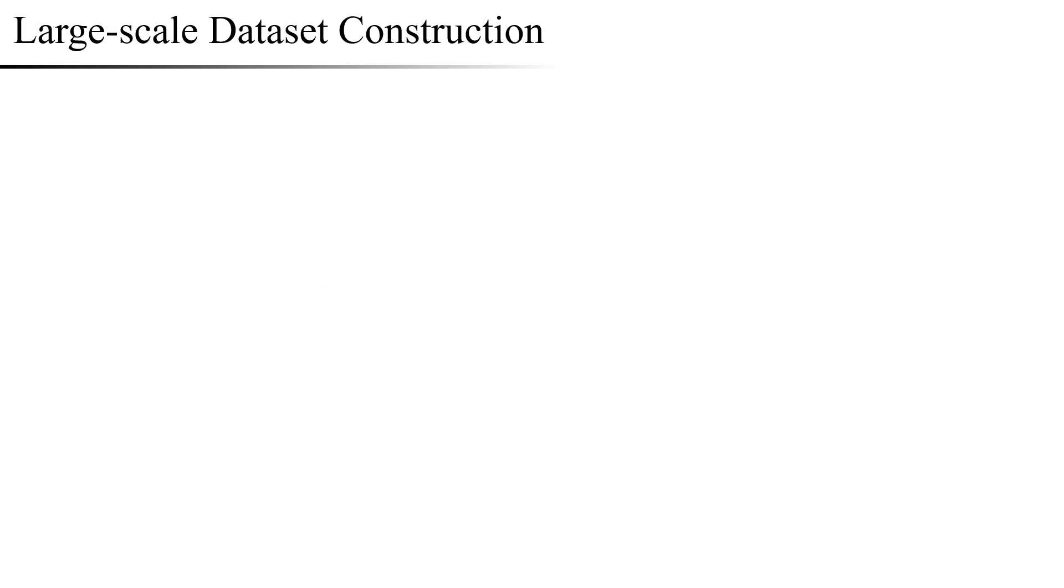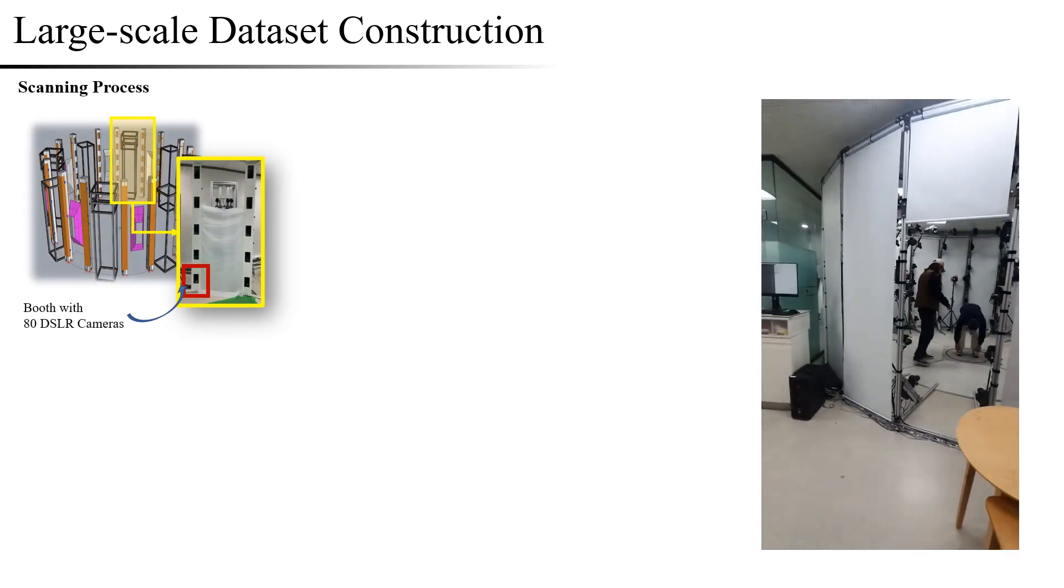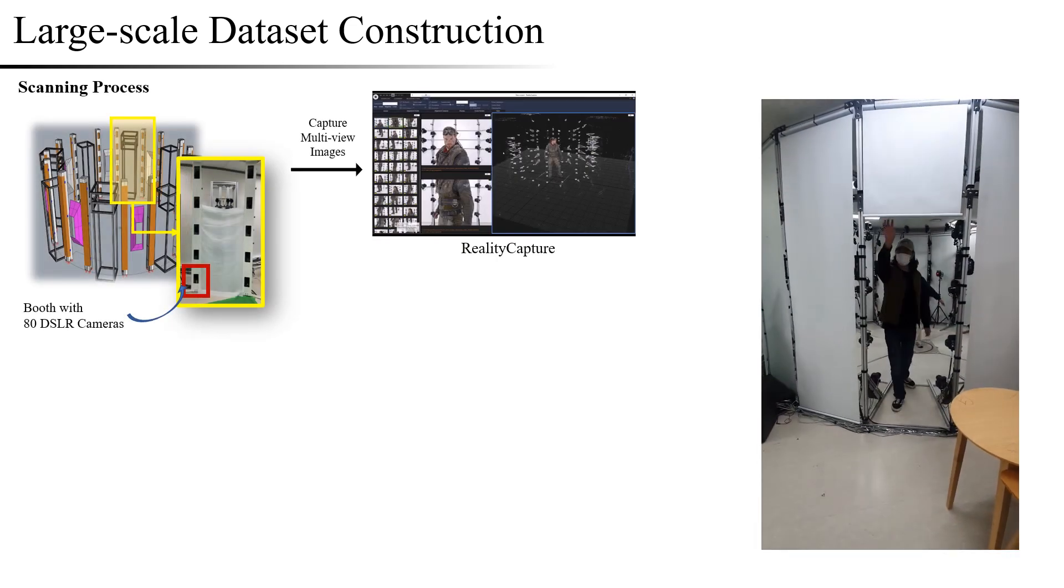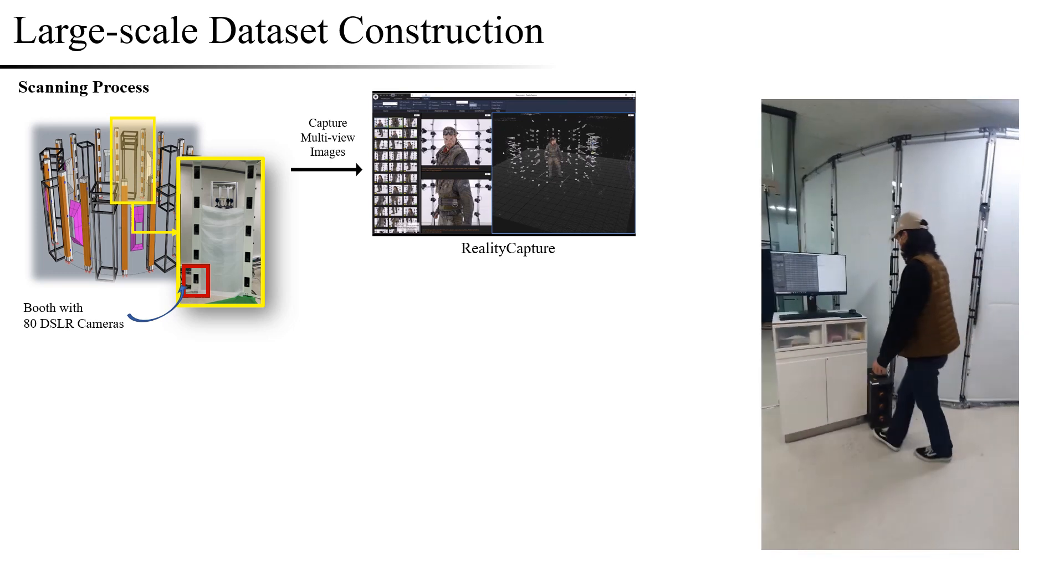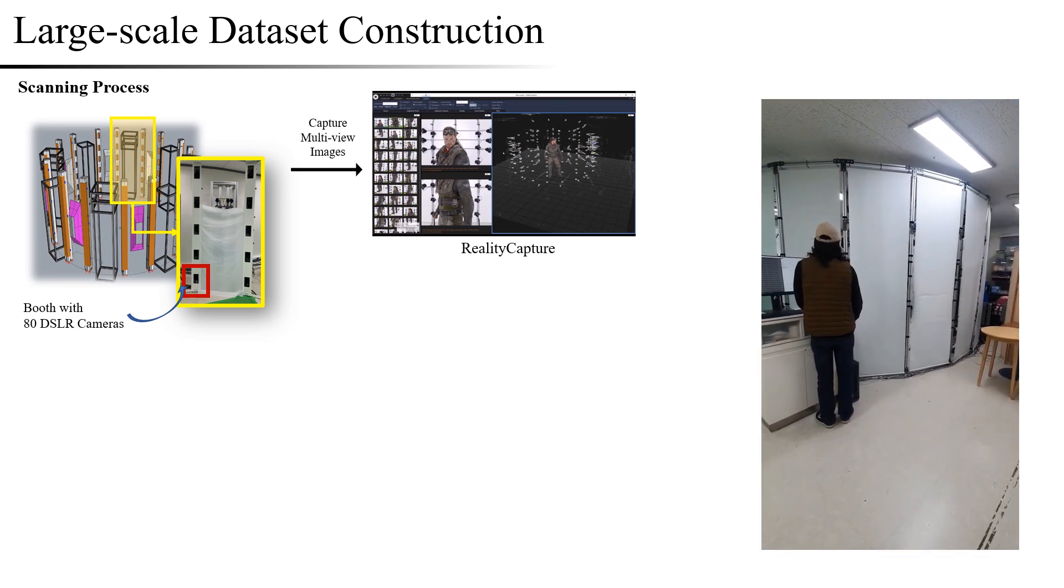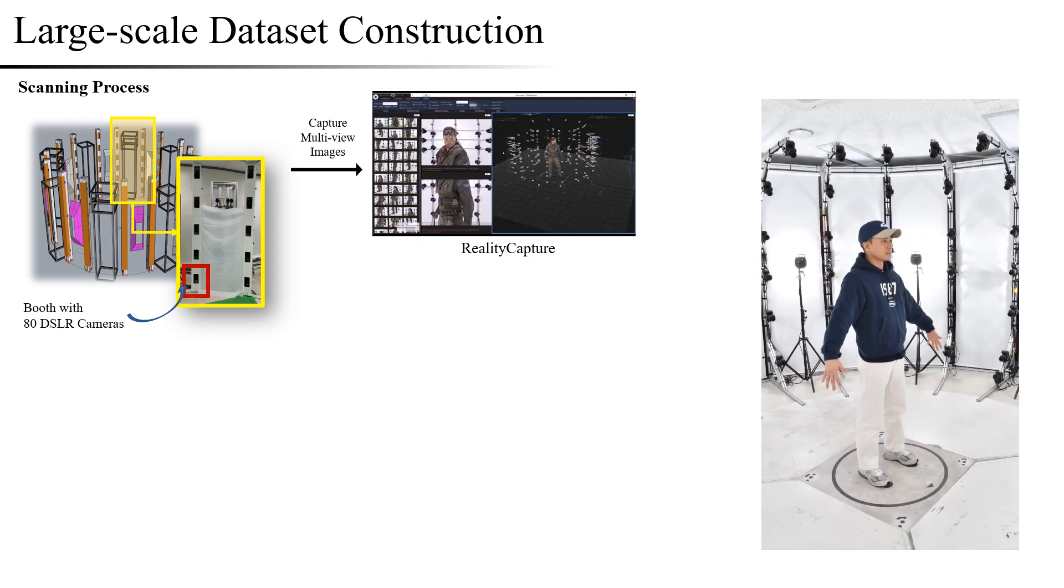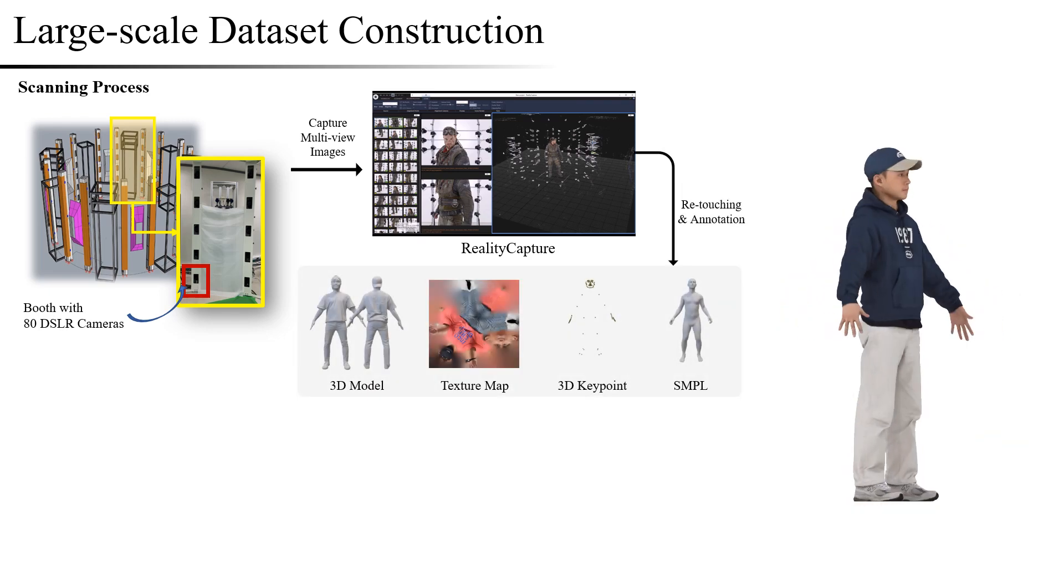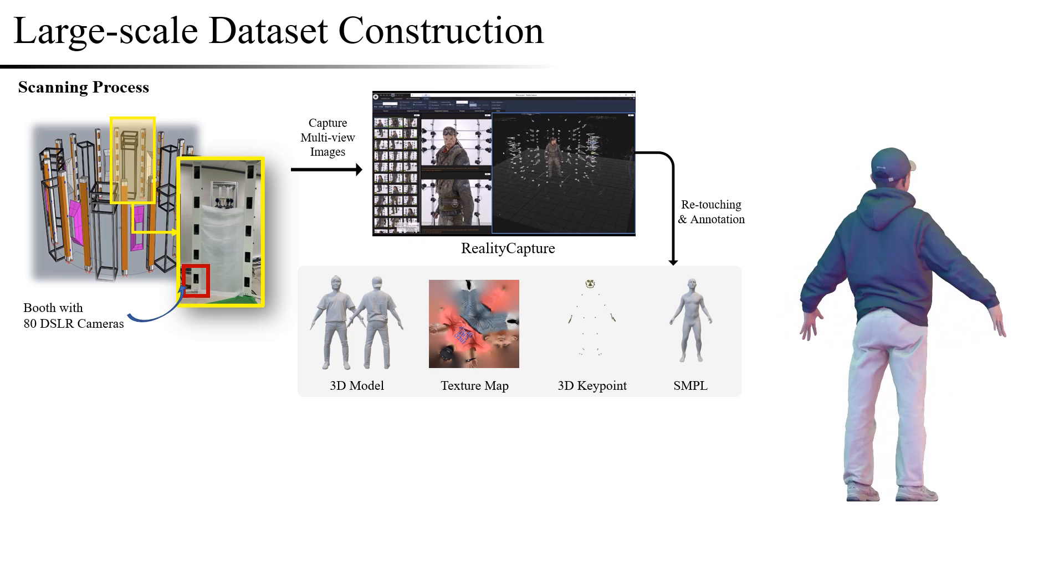First, let me show you the dataset construction process. We installed 80 DSLR cameras in a booth to surround the subject. The multi-view images captured in the booth are processed into an initial mesh using commercial software Reality Capture, and then retouched to create a 3D model and a texture map with color information.